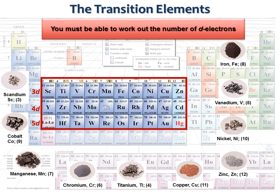Coordination chemistry is concerned with the transition elements which have incomplete D subshells in either their neutral atom or ions. They are originally called the transition elements because their chemical properties are transitional between the S and P blocks. Note that the zinc triad are members of the D block but are not formally transition elements. Also note that the F elements are often called the inner transitional elements but we won't be discussing those in our course.